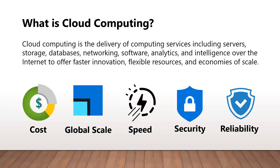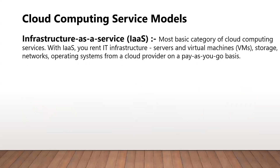Now that we know what cloud computing is and its benefits, let's look at its service models. The first one is Infrastructure as a Service, or IaaS. In this type of service model, the vendor manages the infrastructure while you purchase, install, configure, and manage your own software, including operating system, middleware, and applications — you basically rent the IT infrastructure. IaaS is useful when your business wants to do a lift-and-shift migration rather than refactoring the underlying architecture, or if your website has fluctuating traffic. It's also useful for backing up, storing, and recovering data, and helps manage fluctuating storage needs which are hard to manage on-premise.